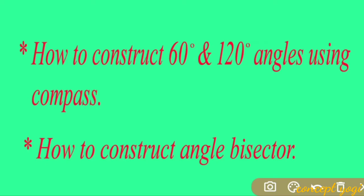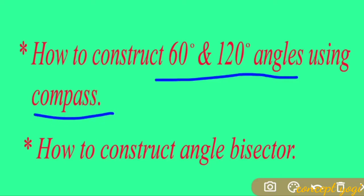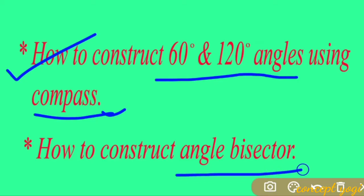Hi friends, in this video we shall learn how to construct 60 degree and 120 degree angles by using compass. Maybe in your lower classes you have learned how to draw different angles by using protractor, but here we will not use protractor. We will use compass to draw different angles. After that we will learn how to construct an angle bisector.